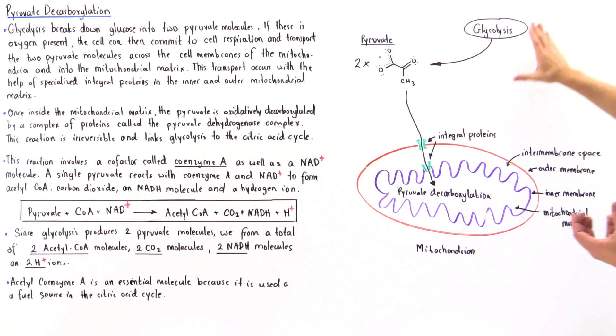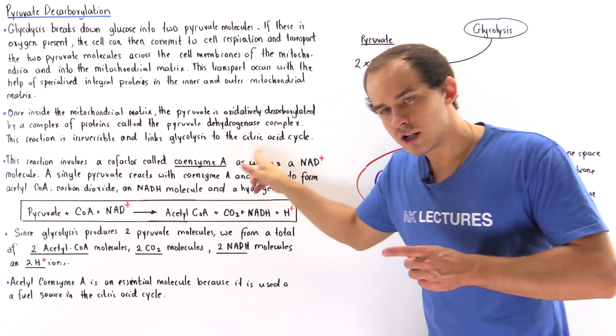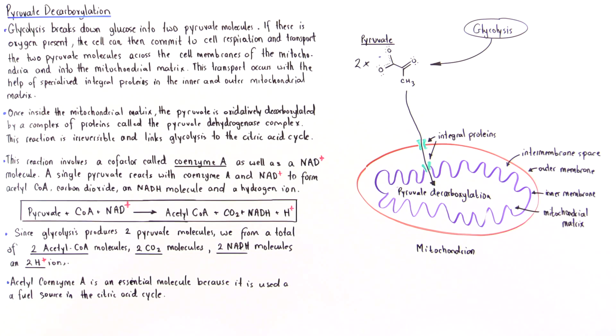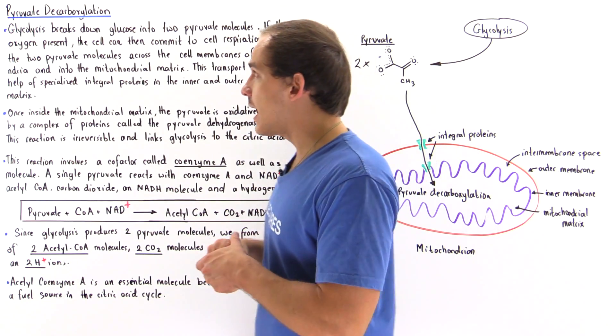What exactly is the purpose of pyruvate decarboxylation? It connects the process of glycolysis and the citric acid cycle that also takes place within the mitochondrion, which we'll discuss in detail in the next lecture.